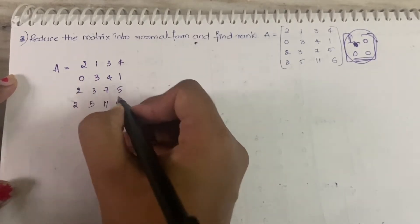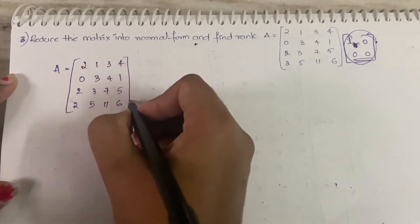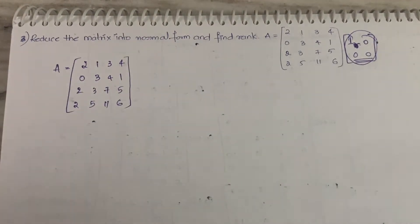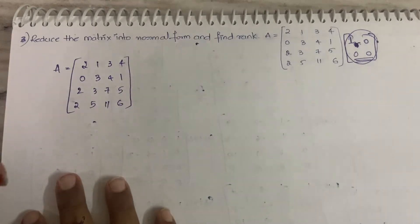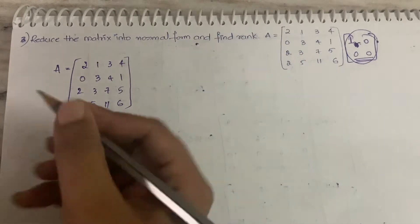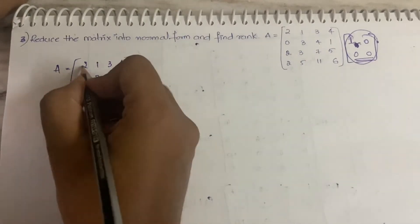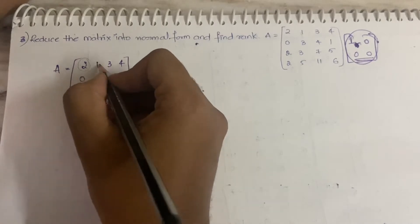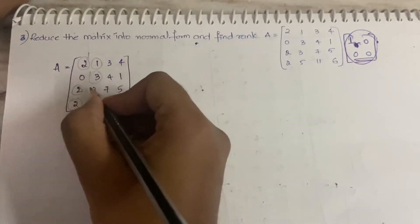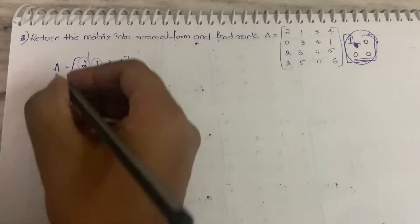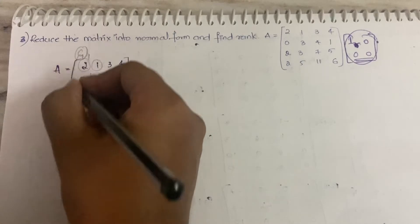Now, in order to make it an identity matrix, these two elements should be zero, these two elements should be zero, and the diagonal elements should be one. So you need to make some elements zero and some elements one. Let us go column-wise — first let us concentrate on the first column.